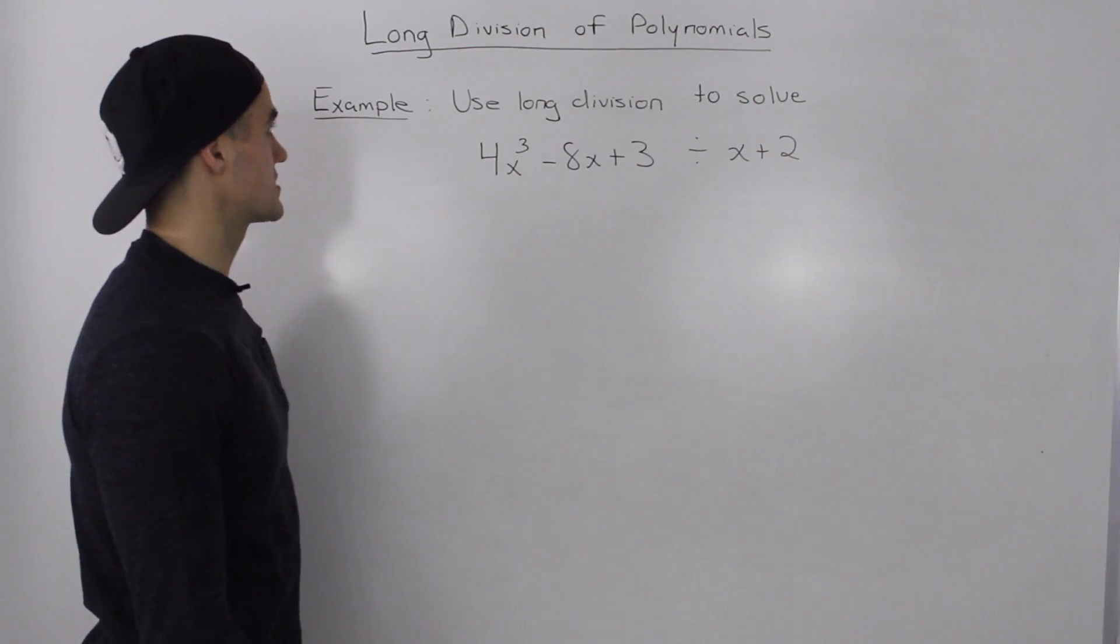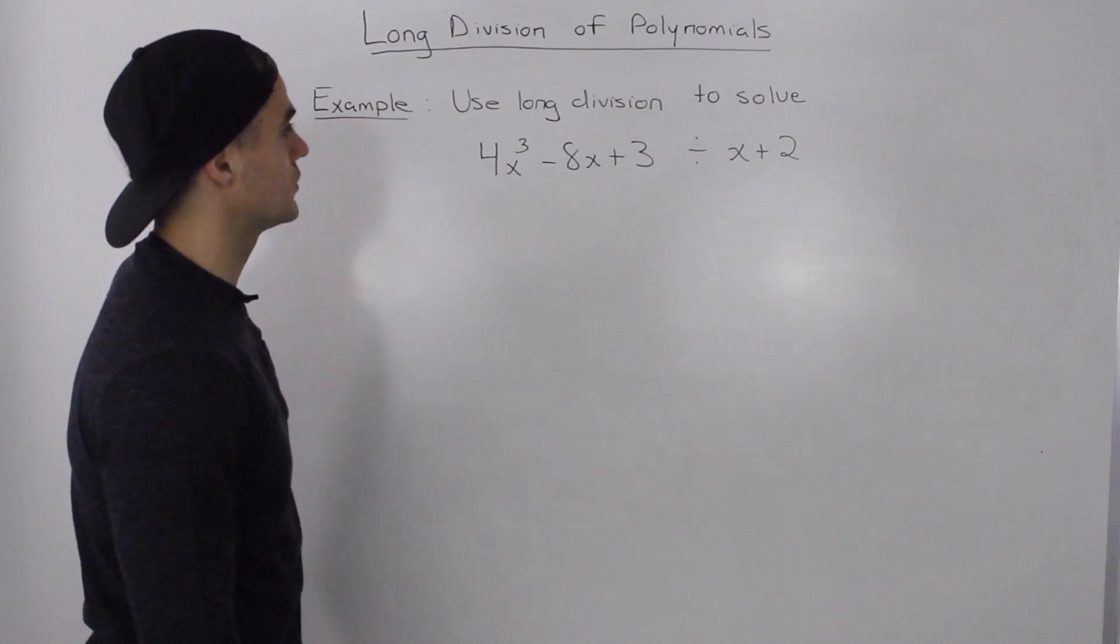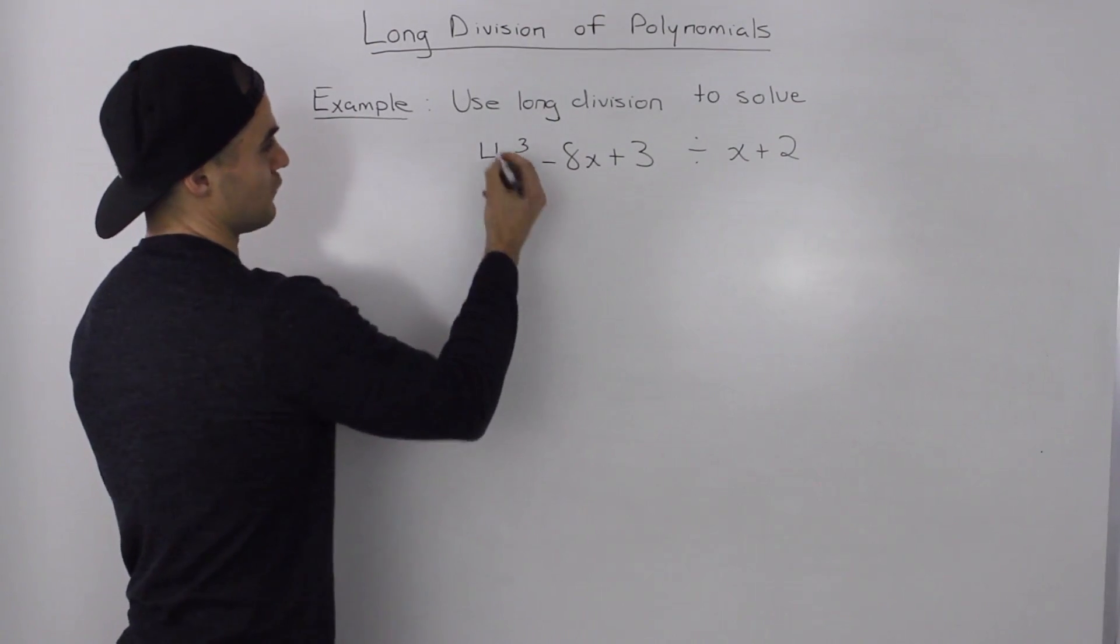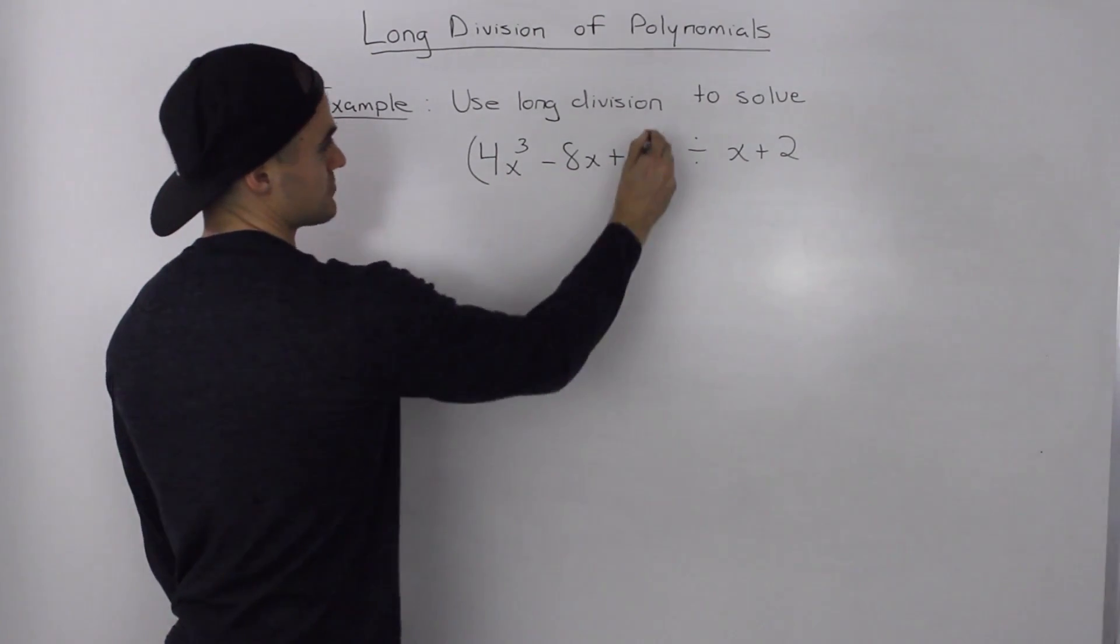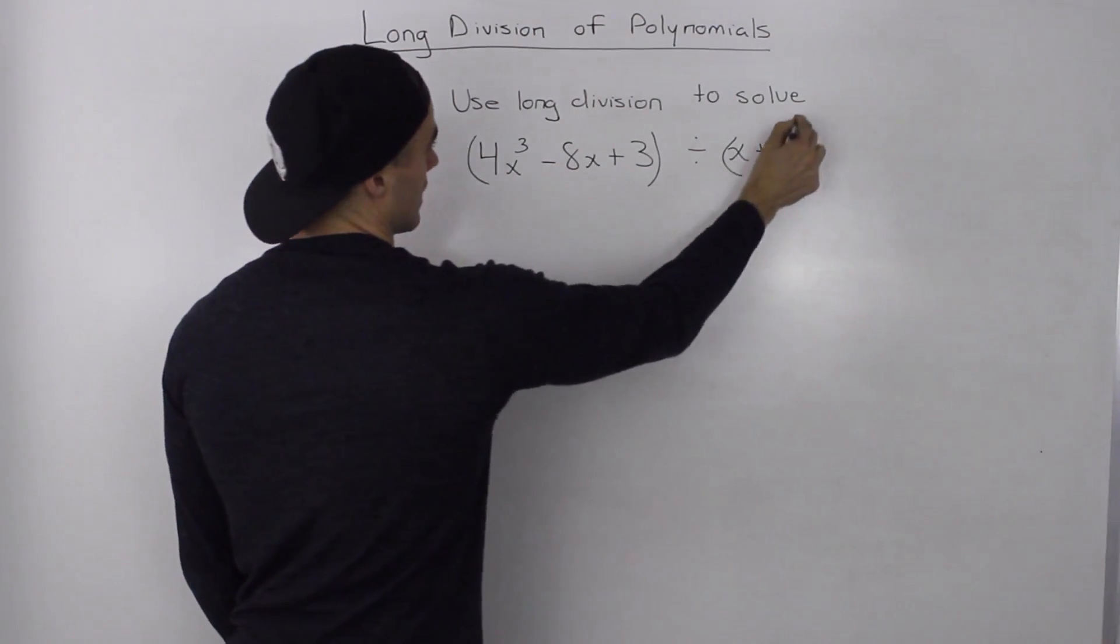What's up guys? So moving on to the next example for the long division of polynomials. We got this 4x cubed minus 8x plus 3 and we're dividing it by x plus 2.